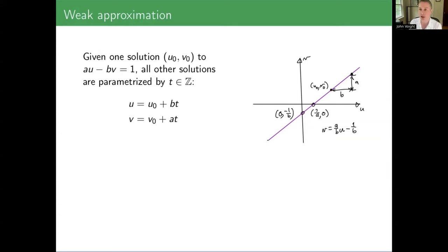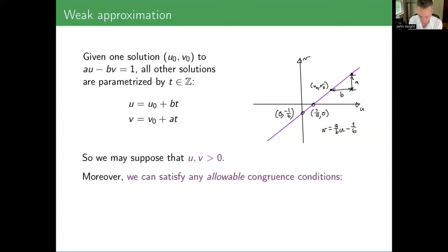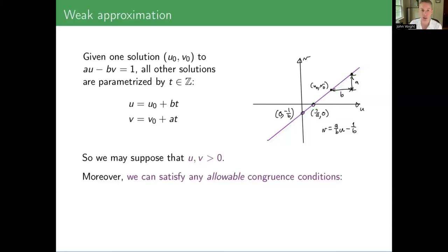Let's do a little review of what types of things we can say for these Bézout coefficients. First of all, you can find one solution using the extended Euclidean algorithm. And then all of the rest are parameterized: U is the original one plus B times t, and V is the original one plus A times t. That is one justification for writing the negative sign, because it allows you to just have the pluses in both cases. This is what it looks like geometrically — it's a line. AU minus BV equals one in the plane.